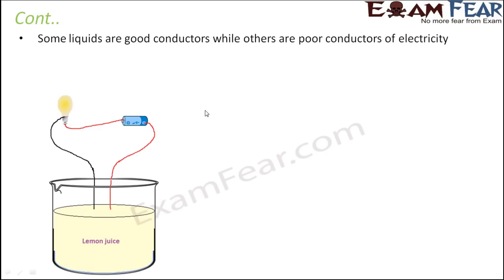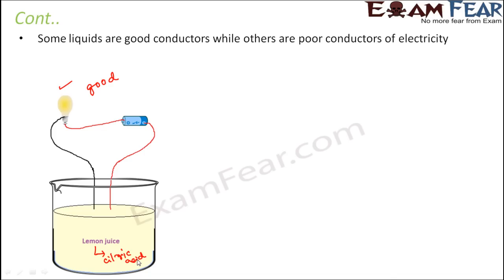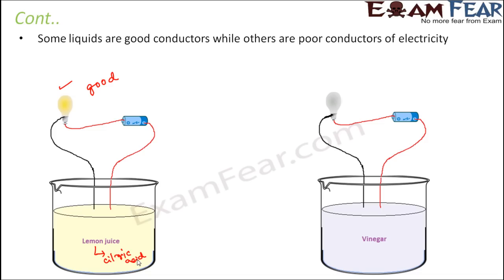Now other than water, let us try to look at some other solutions as well. Let us take the example of lemon juice. So if you make a solution of lemon juice — take water, add some lemon juice to it — what do you see? You see that the bulb glows, which says that lemon juice is again a good conductor of electricity. Now what does lemon juice consist of? Lemon juice consists of citric acid in it. So now why it matters if it contains an acid or a salt, I will tell a little later.